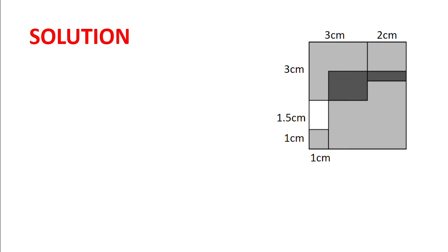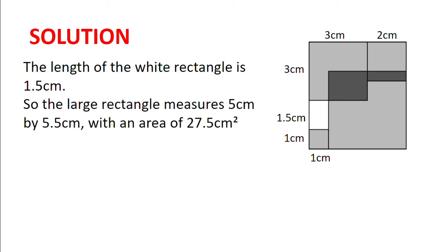First off we have drawn in some of the lengths and we find the length of the white triangle is 1.5 centimeters, because its area is 1.5 centimeters squared and its width is 1 centimeter, so its length must be 1.5 divided by 1. We then find that the large rectangle measures 3 plus 2, 5 centimeters, by 3 plus 1.5 centimeters, which gives it an area of 27.5 centimeters squared.